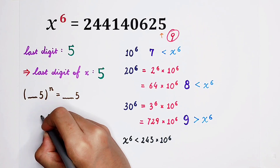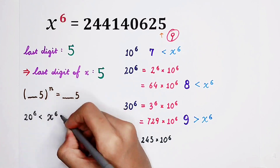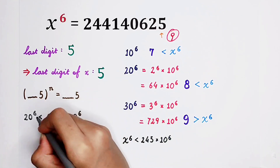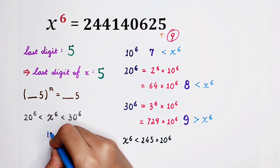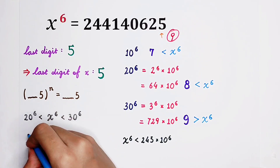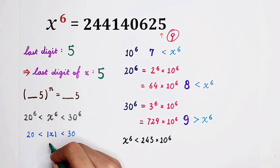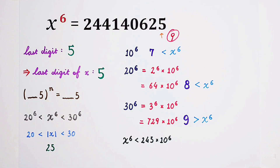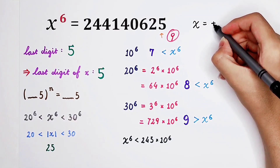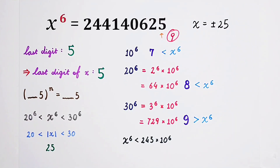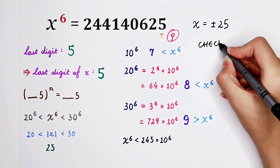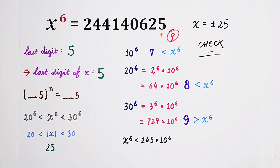So now we can get that the absolute value of x is greater than 20 and smaller than 30. The absolute value of x is also a positive integer whose last digit is five. So it is, of course, 25. Therefore the values of x are positive or negative twenty-five. And don't forget to check — you can find that both solutions are correct. Absolutely correct.